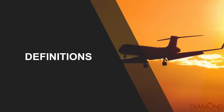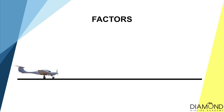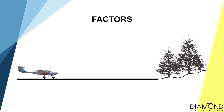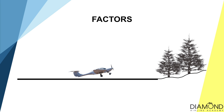Firstly, let's talk about the definition of short field takeoff and landing. The meaning of short field takeoff and landing is to safely take off and land with minimal runway distance. We learn this in case the airport that we are going to has a shorter than usual runway, or on either side of the runway threshold has some tall obstacles, such as trees or buildings.